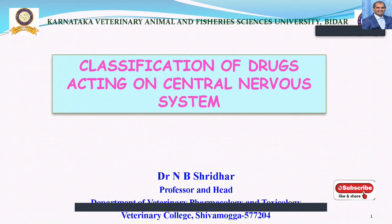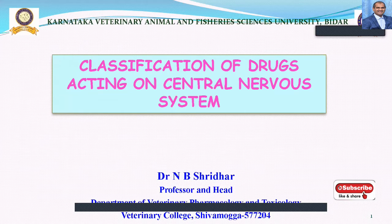So the classification of drugs acting on the Central Nervous System. We have finished three pharmacological classifications: number one is General Pharmacology, then Autocoid Pharmacology, then CNS Pharmacology — the Central Nervous System Pharmacology.